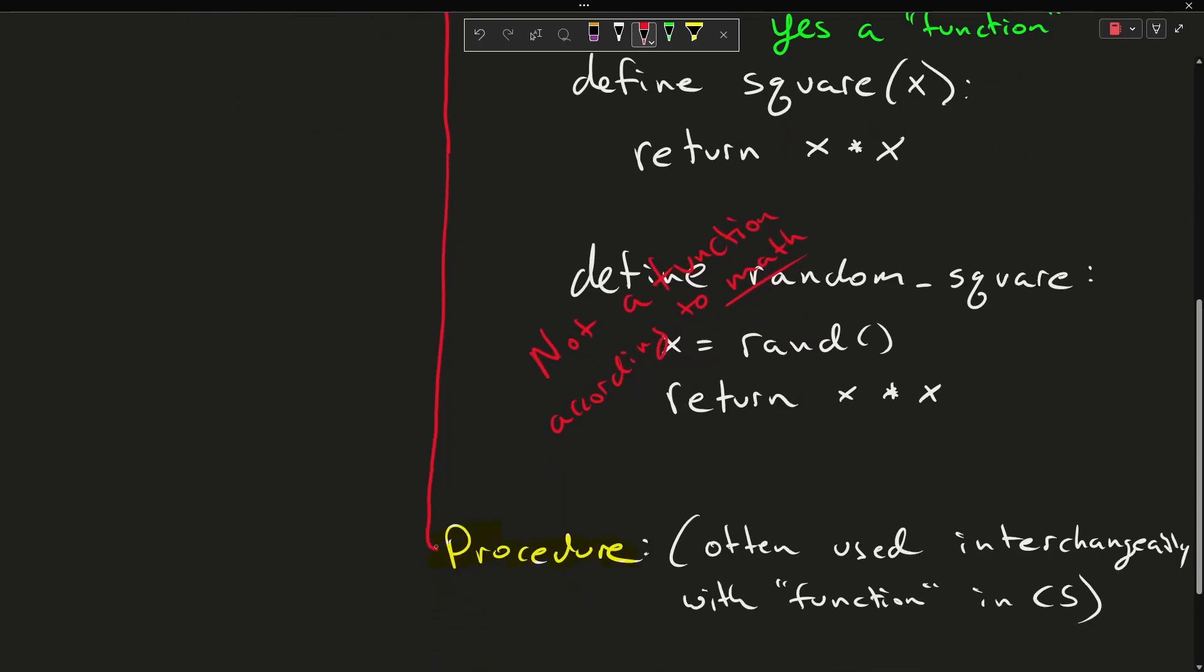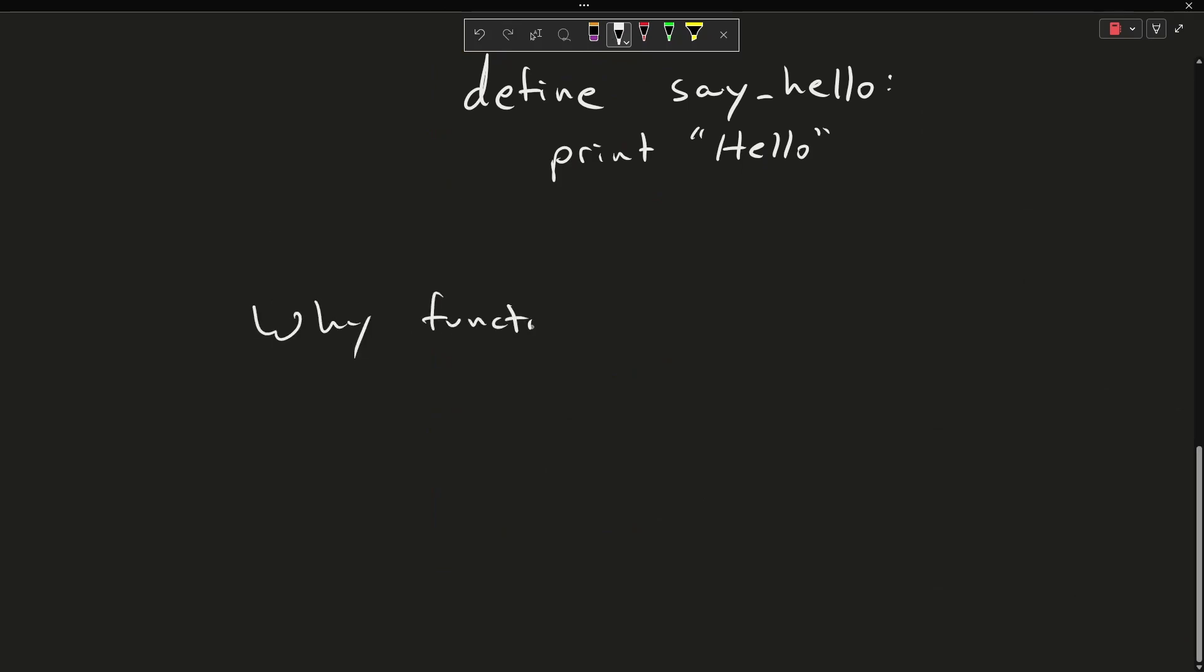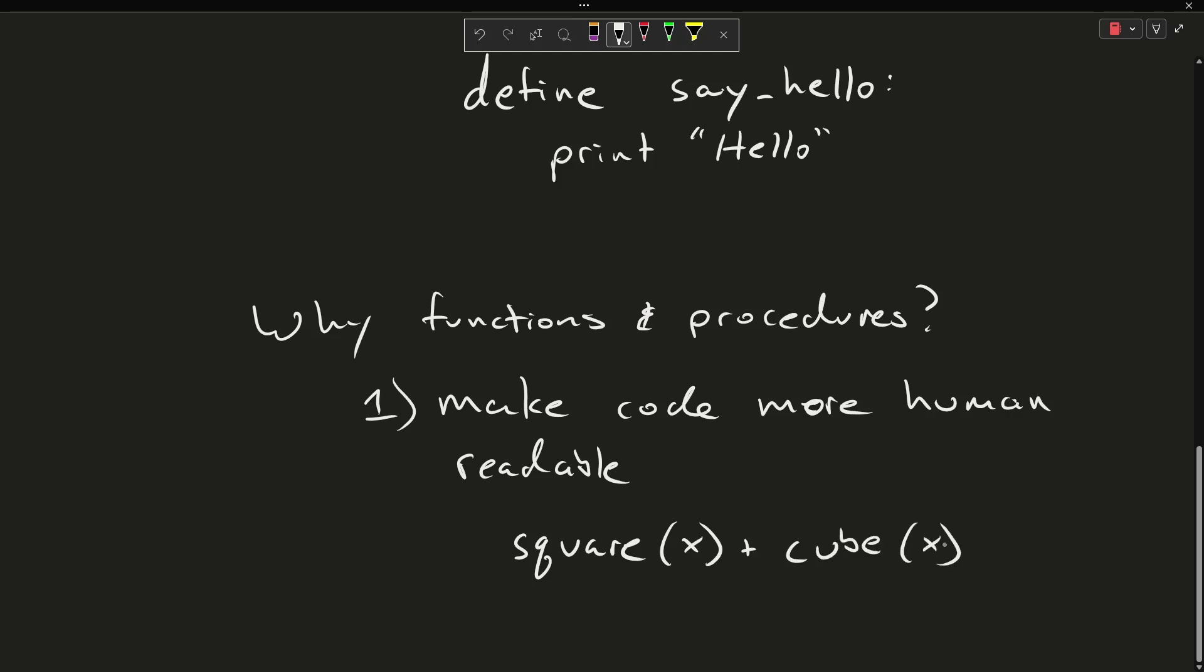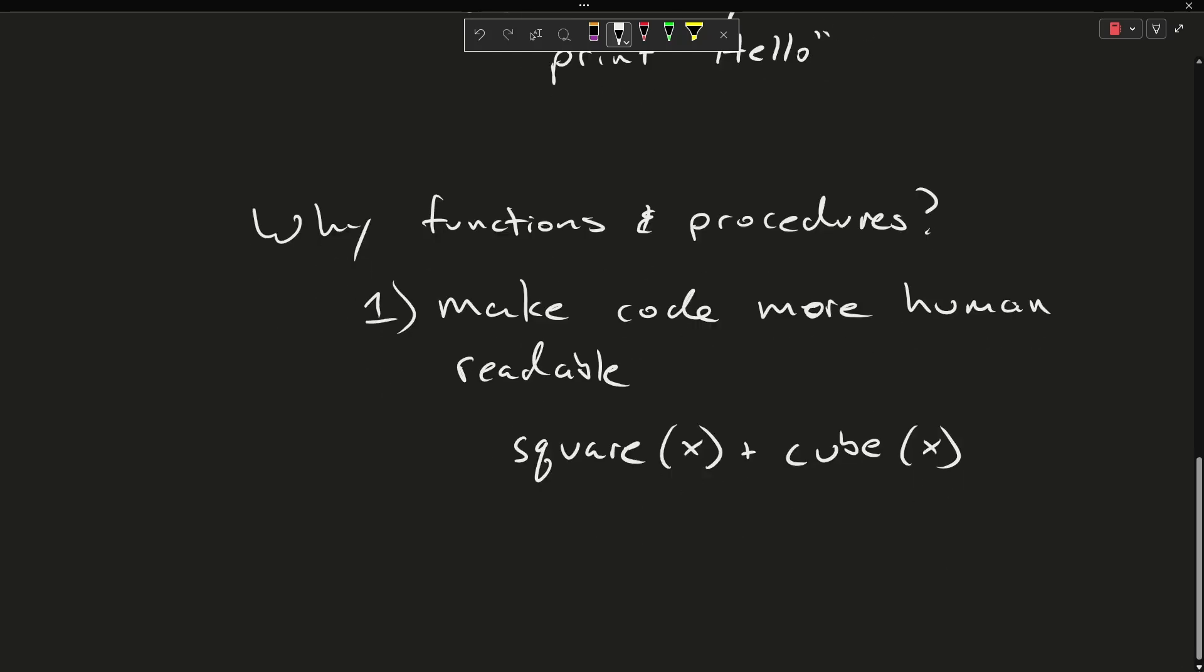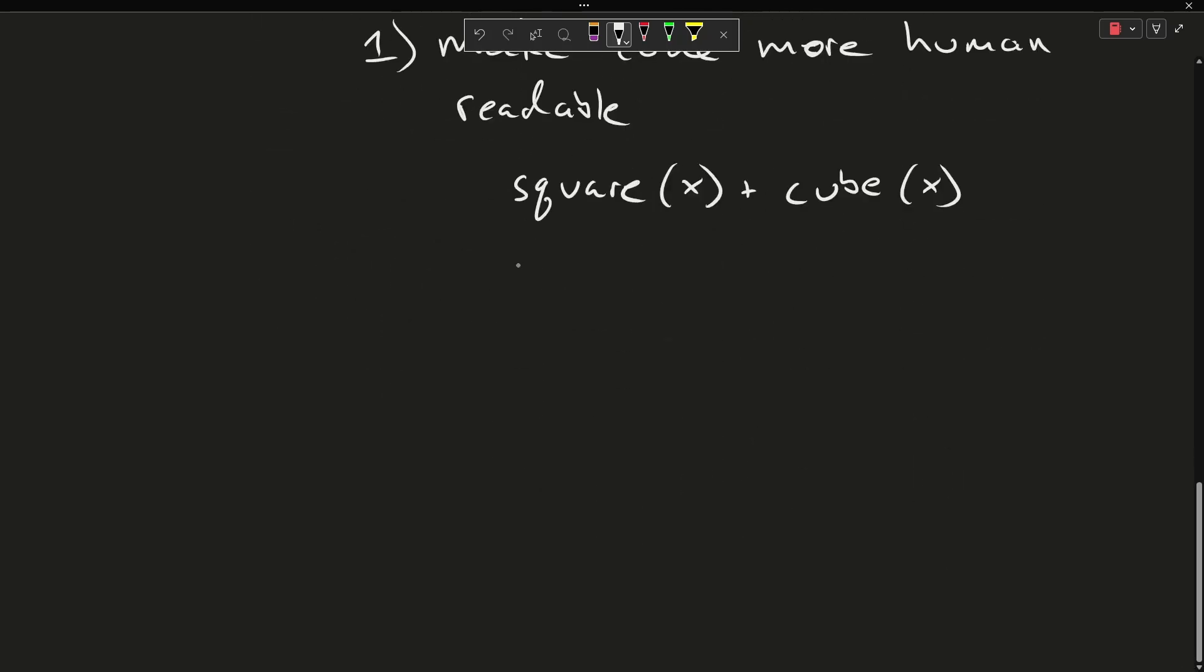Now the point of these things. There's two primary reasons. We're going to make code more human readable. If I said something like square of x plus the cube of x, you know what I mean. Whereas if I were to have written this, x times x plus x times x times x times x, that's harder to read.